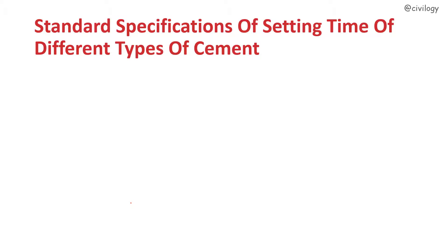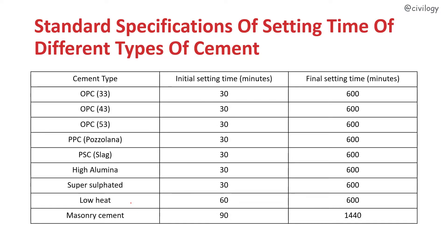Standard specifications of setting time for different types of cement: OPC 33, 43, and 53 grade all have an initial setting time of 30 minutes and a final setting time of 600 minutes. PPC (Pozzolana cement) also has 30 minutes initial and 600 minutes final setting time. PSC, high alumina, and super sulfated cements have equal setting times. Low heat cement has 60 minutes initial and 600 minutes final setting time. Masonry cement has 90 minutes initial and 1440 minutes final setting time.